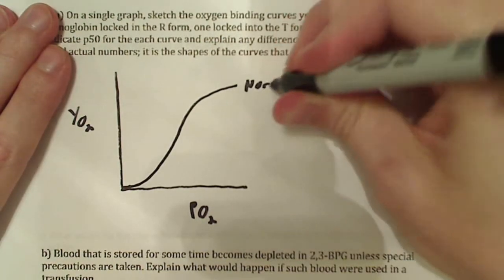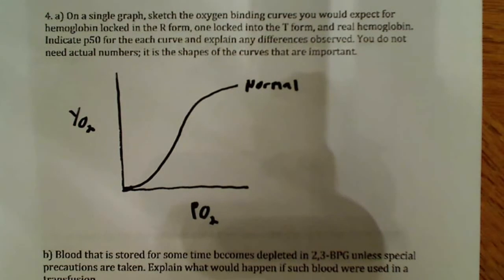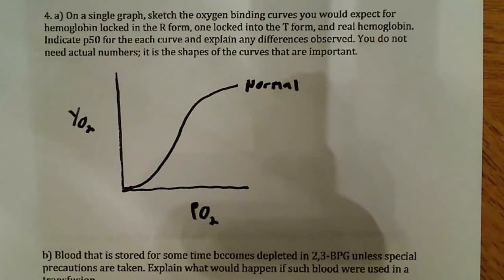I'll just say over here, maybe normal. Now, once I have that, I know one thing. I know that hemoglobin locked in either the T form or the R form is not going to show cooperative binding. The normal sigmoidal curve is going to be out the door.